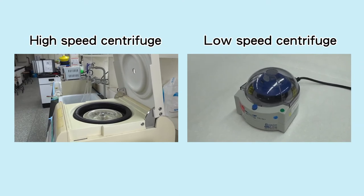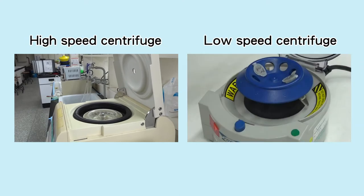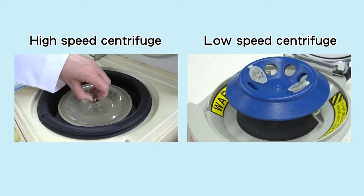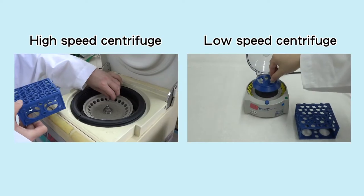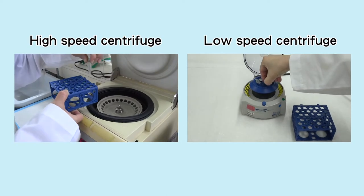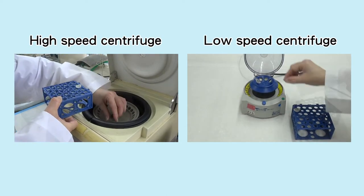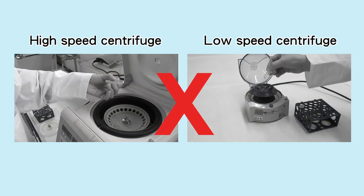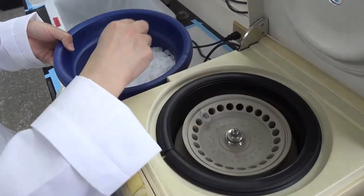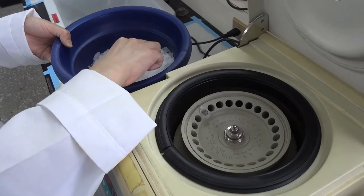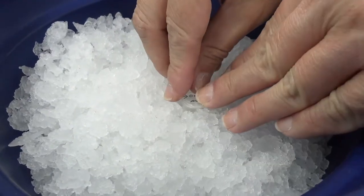After centrifugation is completed, open the centrifuge's lid. If it is a high-speed centrifuge, also open the rotor's cap. Carefully take out the centrifuge tubes and place them on the centrifuge tube rack to avoid shaking and disturbing the sediments. If the samples must be kept in low temperature, an icebox must be prepared before taking out the samples.